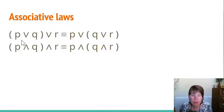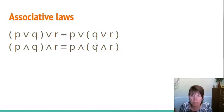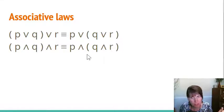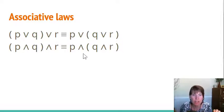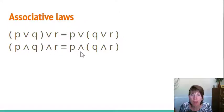The associative laws say that if you have a series of OR operations, it doesn't matter what order you do them in — you can move the parentheses around to do them in whatever order works best. The same applies to AND: if you have a series of ANDs, you can change which order they're done in. Be careful though — that doesn't apply when you have a mixture of OR and AND, since those have different order of operations.